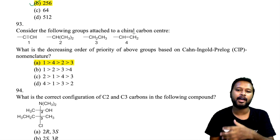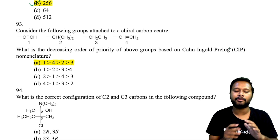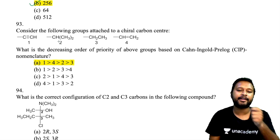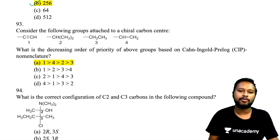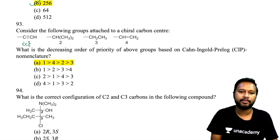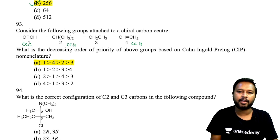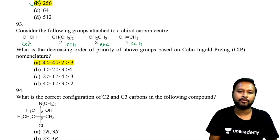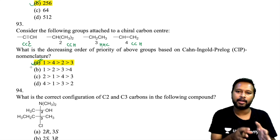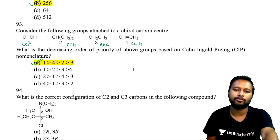Question 93 asks for decreasing CIP priority order of groups attached to a chiral carbon. In CIP nomenclature, triple bonds count as three carbons and double bonds as two carbons attached. Comparing: group A has three carbons attached (triple bond), group B has two carbons and one hydrogen (double bond), and another group has two hydrogens and one carbon — giving the lowest priority. Highest priority is group A; option A gives the correct decreasing order.